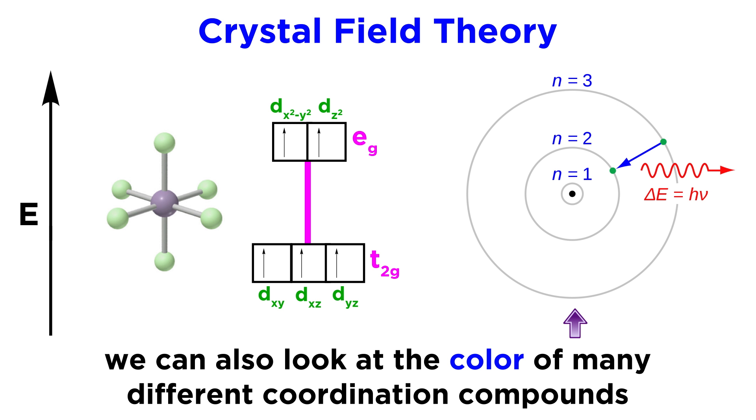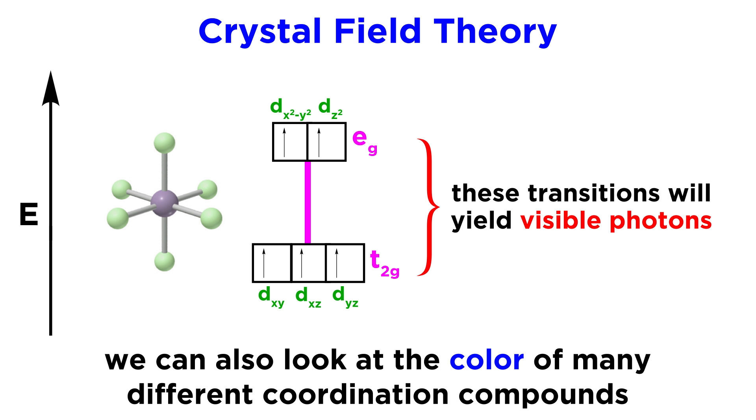If that light is visible and hits our eyes, we see the object, and for coordination compounds, the energy difference between the d orbitals results in the emission of photons in the visible range.